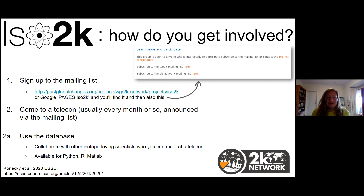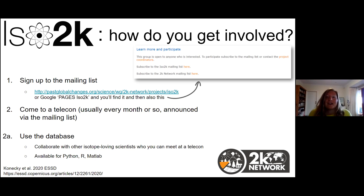There is a lot still to be done, including a plan for maintenance of the database and future updates, as well as entering new datasets as they're published. You can contribute your own data, and there's huge potential for helping with any science questions you might have about the water cycle. How can you get involved in ISO 2K? We have a mailing list you can join from the Pages website, and every month or so we have a telecon announced via that list. We also encourage you to go straight to the database — there are serializations in Python, MATLAB, and R, and the database description paper comes with example code.